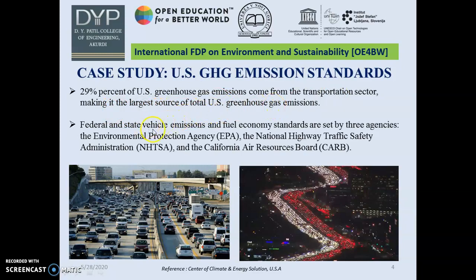In the US, there are three agencies which create vehicle emission norms and fuel economy norms. First is the Environmental Protection Agency. Second is the National Highway Traffic Safety Administration. Third is the California Air Resources Board. As we have seen in the two previous videos, there is heavy traffic on roads and most are driving IC engine vehicles.